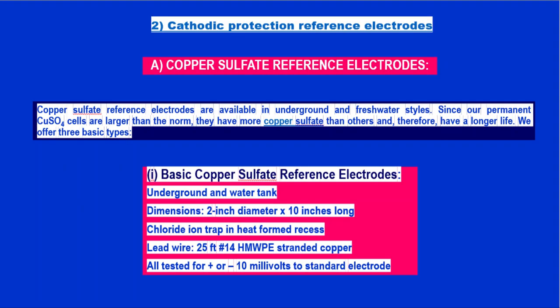The second category is Cathodic Protection Reference Electrodes. The first type is Copper Sulfate Reference Electrodes, available in underground and fresh water styles. Since permanent copper sulfate cells are larger than the norm, they have more copper sulfate and therefore a longer life. Three basic types are offered. The basic copper sulfate reference electrode for underground and water tank applications has a 2-inch diameter, 10-inch length, with a chloride ion trap in heat-formed recess, red wire, and high molecular weight polyethylene construction.